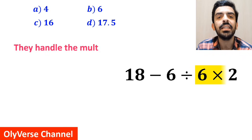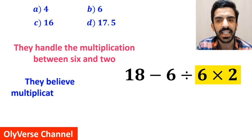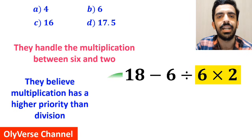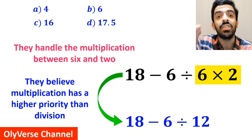At the next step, first they handle the multiplication between 6 and 2 because they believe multiplication has a higher priority than division. So, they write this expression as 18 minus 6 divided by 12.